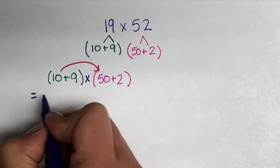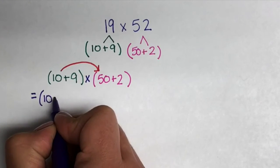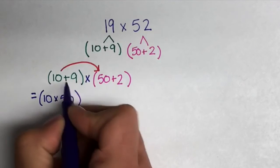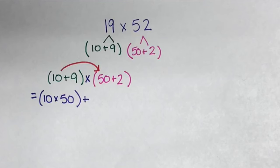10 times 50 represents the 1 in 19 and the 5 in 52 being multiplied together. Next we add the addition sign.